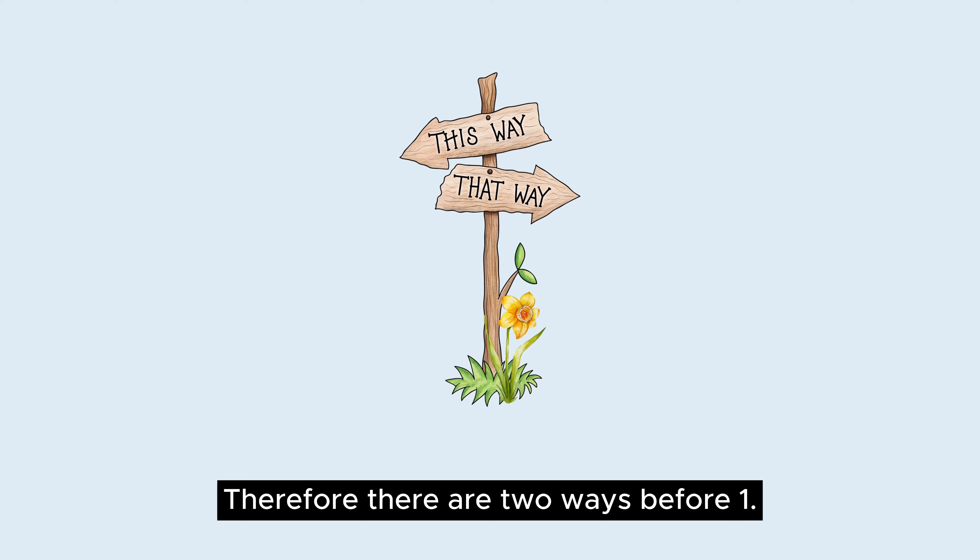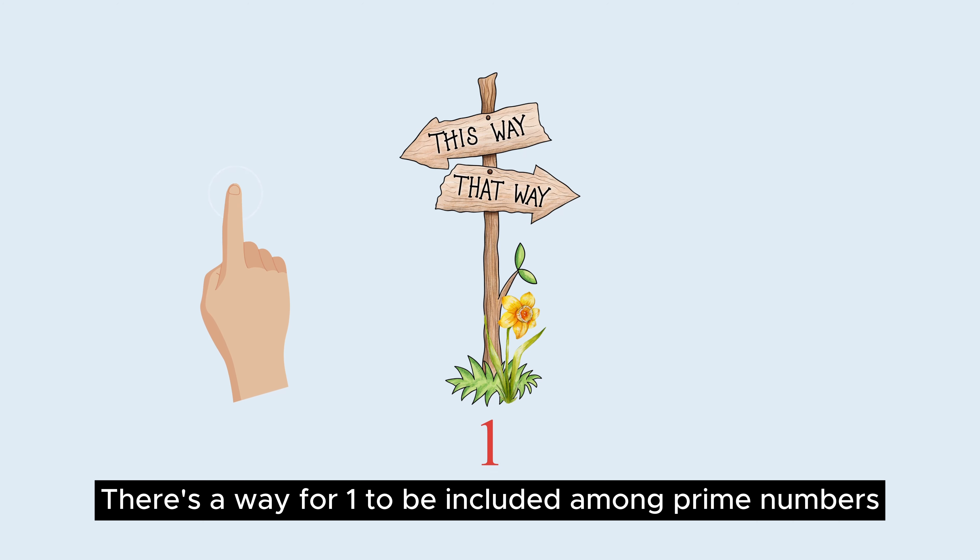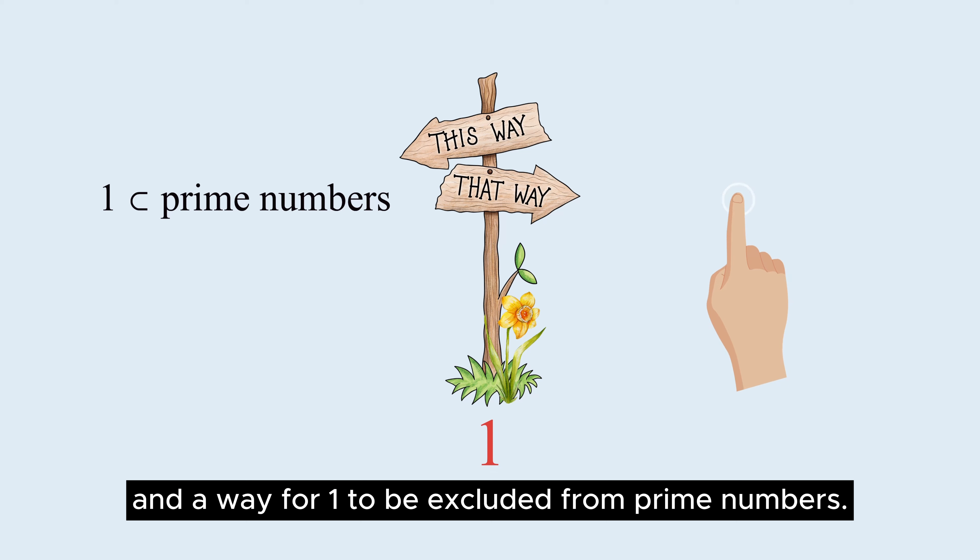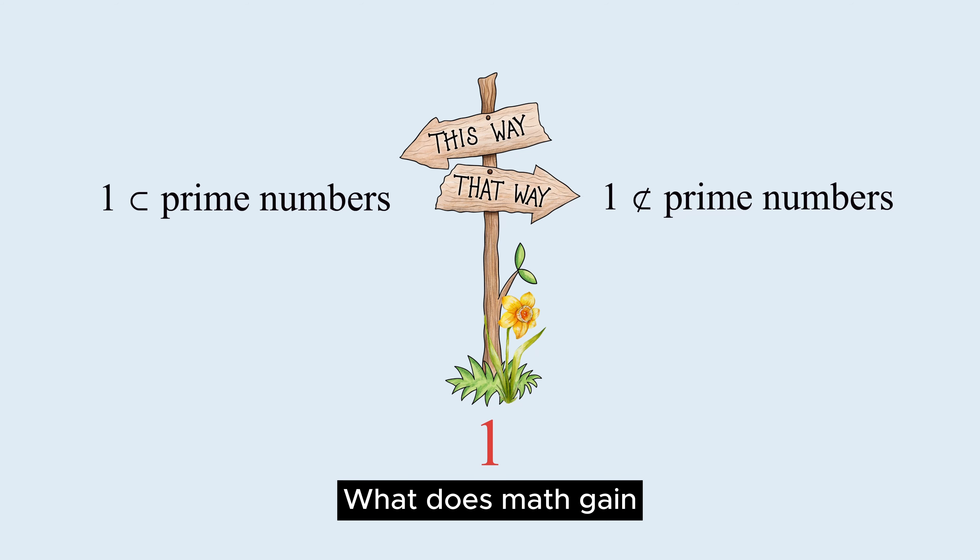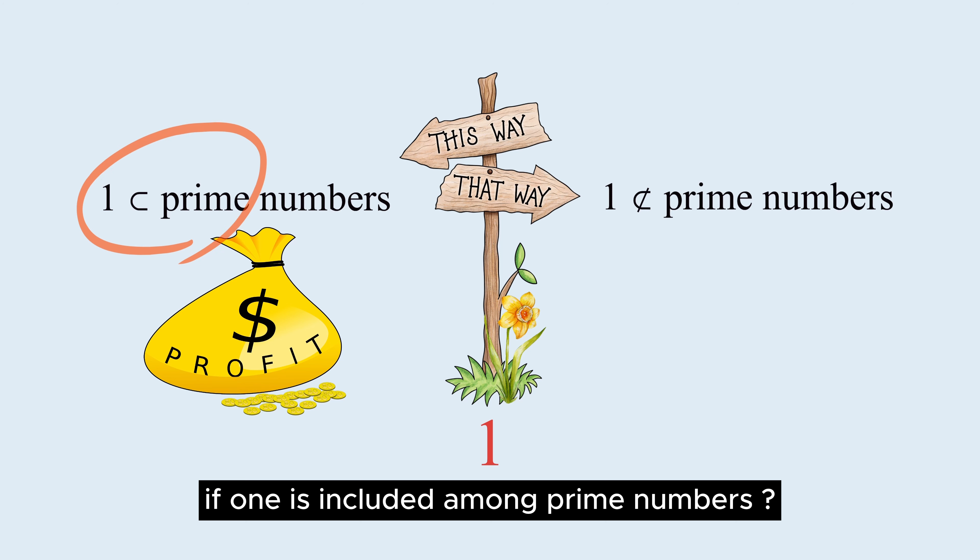Therefore, there are two ways before 1. There is a way for 1 to be included among prime numbers and a way for 1 to be excluded from prime numbers. What does math gain if 1 is included among prime numbers?